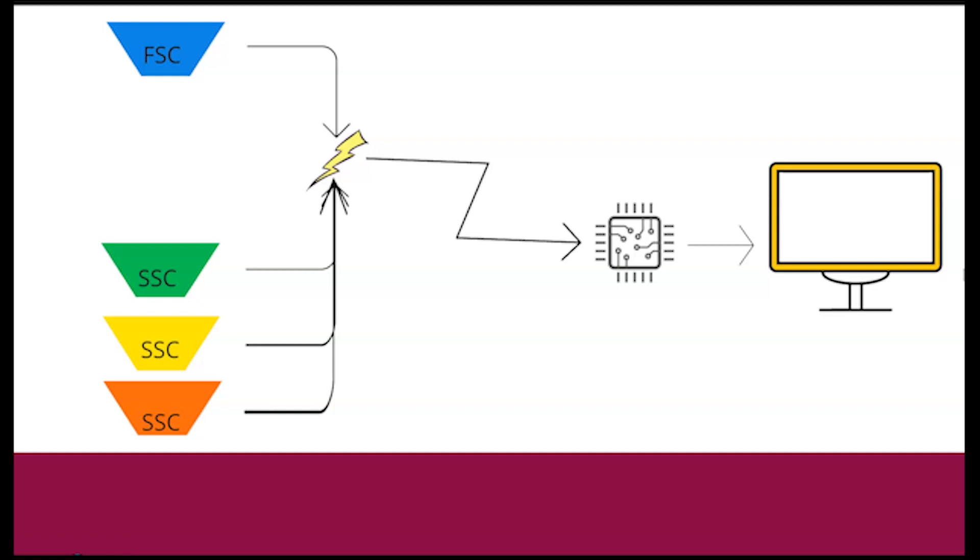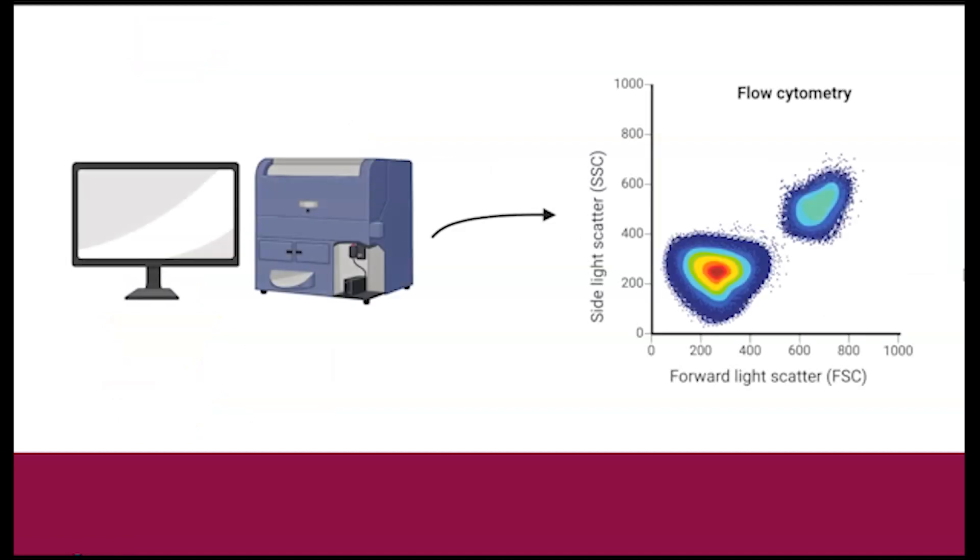Individually, forward and side scatter cannot be fully analyzed to draw any conclusions. However, when combined, they form scatter plots that show distinct populations of cells with specific scattering patterns, which allows for identification of different types of cells within a heterogeneous sample.